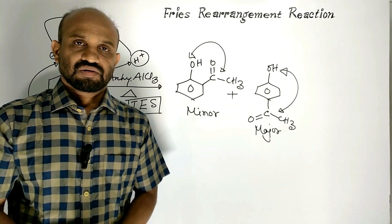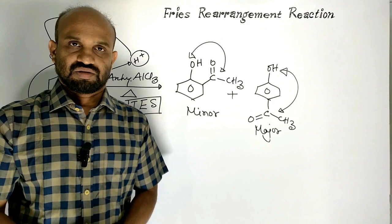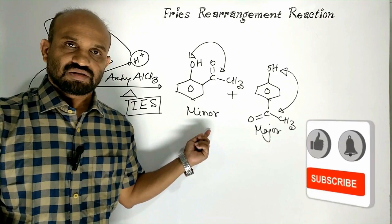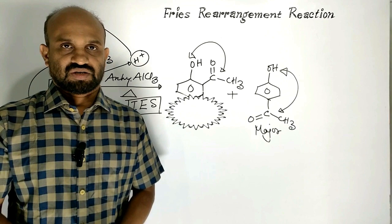The para product, due to less steric hindrance, can form in large quantities. That is why parahydroxyacetophenone is the major product and orthohydroxyacetophenone is the minor product.